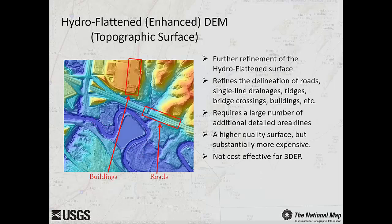The enhanced hydroflattened DEM has all the characteristics of a simple hydroflattened DEM, but with further delineation of features such as roads, single line drainages, ridges, bridge crossings, and buildings. Such delineation requires a large number of additional break lines, which substantially increases the amount of time and effort expended and increases the costs needed to create the surface representation. Although the result is a very high quality surface model, it is not cost effective for the 3DEP program.